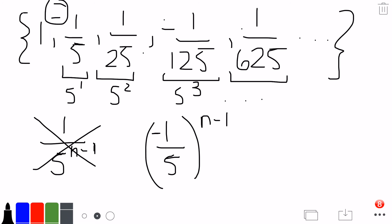So we have to make this a negative 1 fifth. And then we'll have negative 1 fifth raised to the 0 is 1, negative 1 fifth raised to the 1 is negative 1 fifth. And then it keeps alternating because of this exponent. Our final answer: a sub n equals negative 1 fifth raised to the n minus 1.